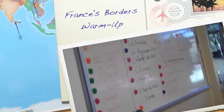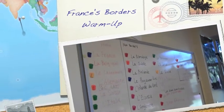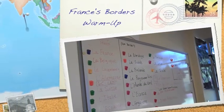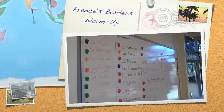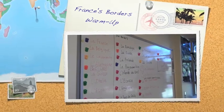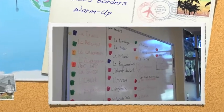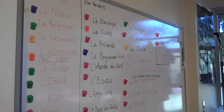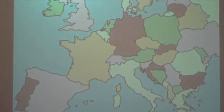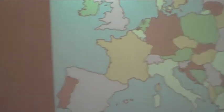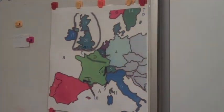This is day two of Europe. We're going to do a warm-up. We're going to start with non-borders, and then we'll do borders, then we'll do bodies of water and mountains. We're using the smart board, this image, and also a little poster image over here.